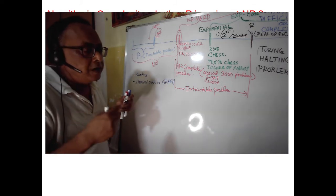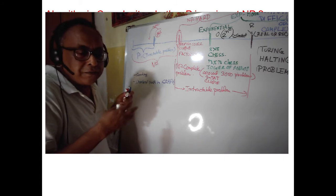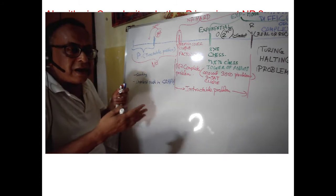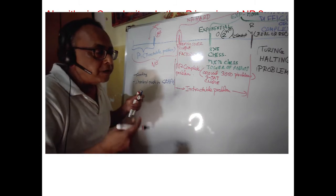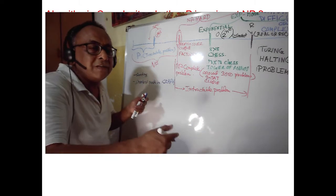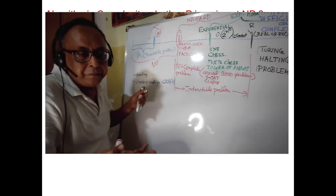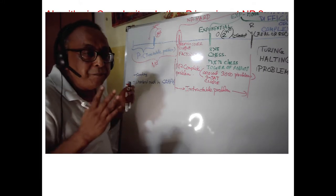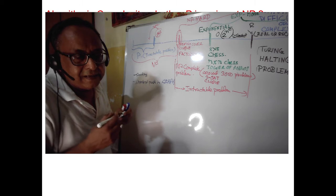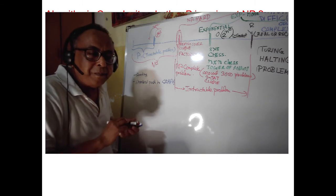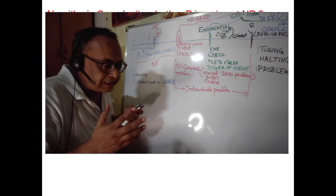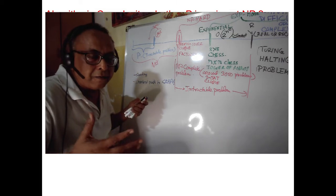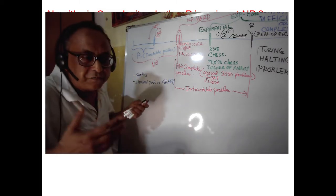Take the case of Sudoku: getting a solution is hard. If it is 81×81, even a computer takes time. But once the solution is given, even a human can do it within a second. That is the characteristic of NP-complete problem.